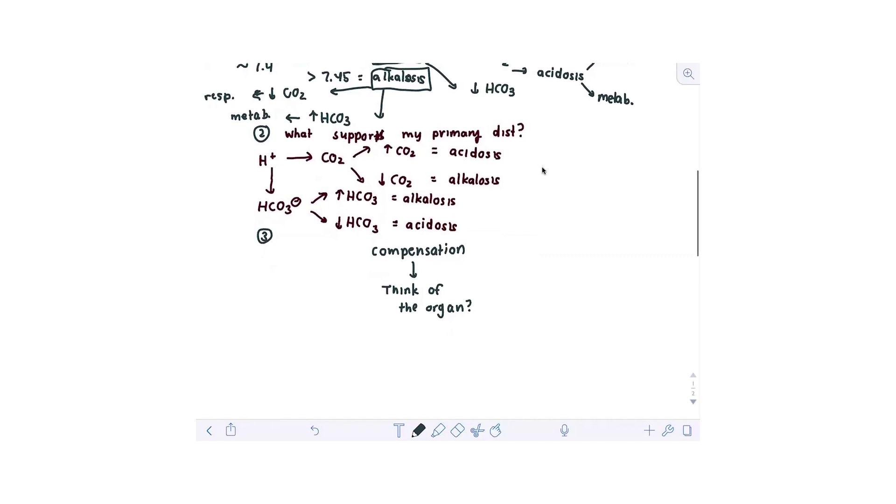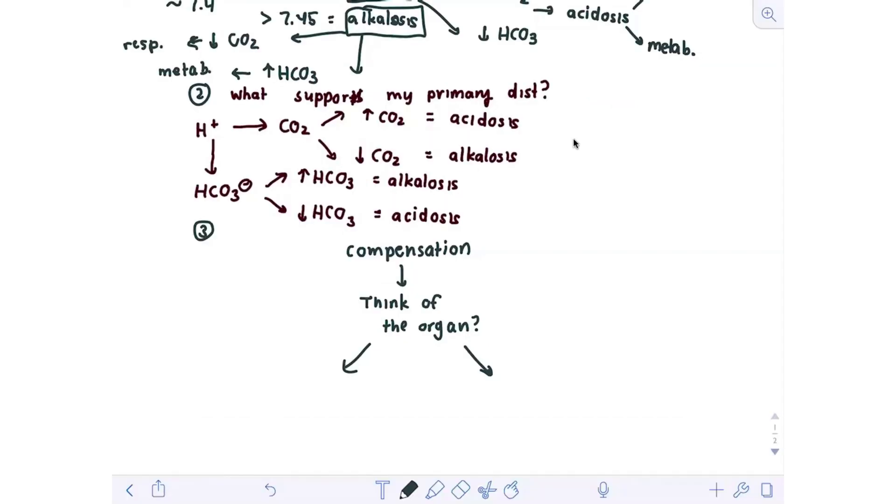So what that means is that when you're talking about an acidosis, an acidosis is going to be either respiratory or metabolic. And that acidosis, if it's a respiratory acidosis, you're going to have a kidney compensation. If you have a metabolic acidosis, your lung is going to be compensating. But I always like to think of it from an organ perspective.